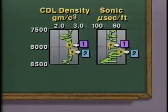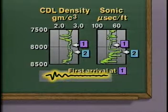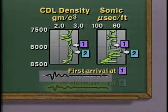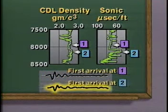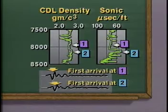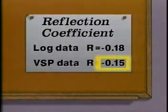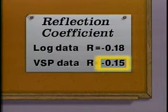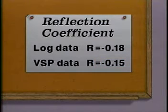We also recorded VSP data at these depths. This is the first arrival at depth 1, and this is the first arrival at depth 2. By comparing the relative amplitudes of these first arrivals, we would calculate a reflection coefficient of minus 0.15 for the shale-limestone interface.